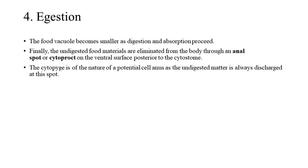Egestion: the food vacuole becomes smaller as digestion and absorption proceed. Finally, the undigested food materials are eliminated from the body through an anal spot, or cytoproct, on the ventral surface posterior to the cytostome. The cytopyge is of the nature of a potential cell anus, as the undigested matter is always discharged at this spot.